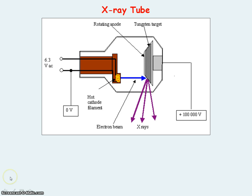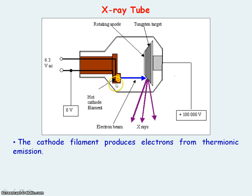This diagram is showing you an X-ray tube. A large current in the cathode filament causes it to heat up, and this hot cathode filament releases electrons. This process is known as thermionic emission — 'thermi' meaning heat, and the ionic emission refers to the electrons being emitted from the filament.